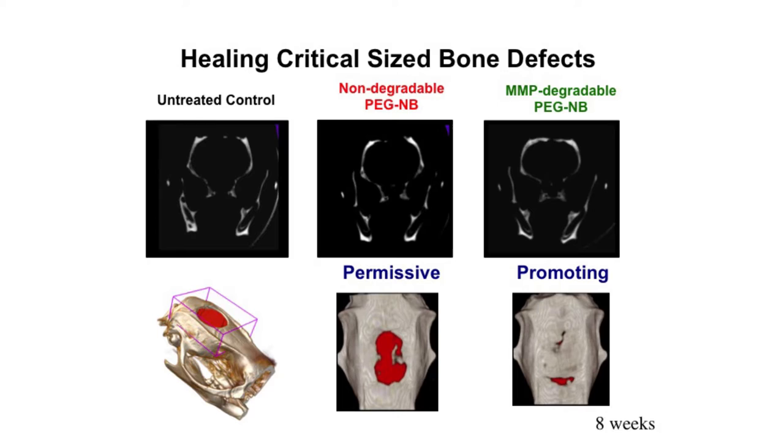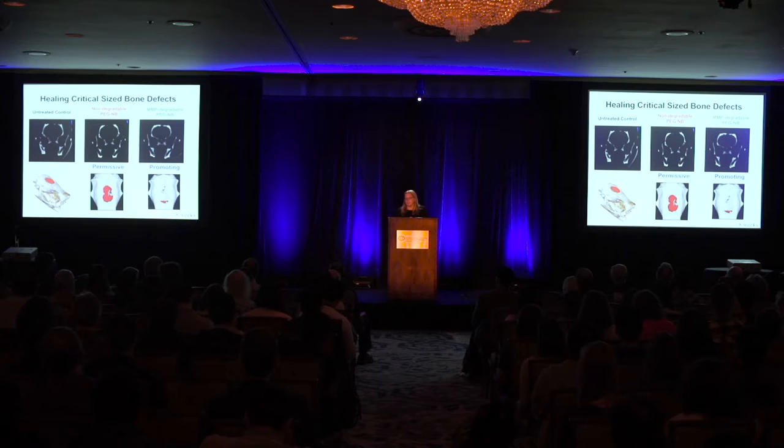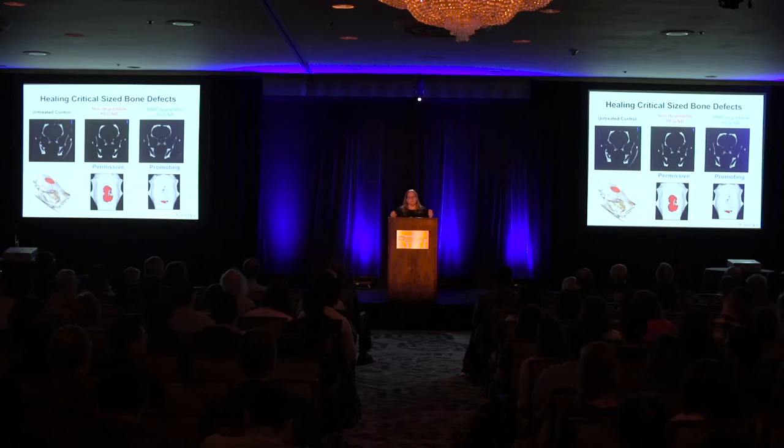One can begin to think about designing materials-based strategies. Here we've made a critical size defect in a rat skull — one that won't heal on its own. In this craniofacial defect, you're very interested in being able to regenerate bone very quickly if there's been a tumor or a car accident with a large loss of bone. One can insert just material-based systems designed to recruit endogenous cells and provide a matrix that certain cell types can migrate through — you can have systems where there is very robust regeneration, all materials directed, designed by connectivity and biological functionality.